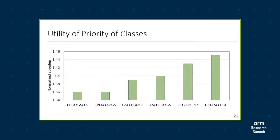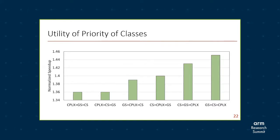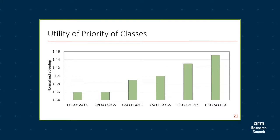Let's look at the utility of the priority ordering of the classes. We prioritize global stream over constant stride and complex stride, and that performs better. It improves the row buffer hit rate and improves the aggressiveness with which it prefetches the entire region. However, if we do it the other way around and prioritize CPLX over GS and CS, there is a huge performance degradation of around 9%.